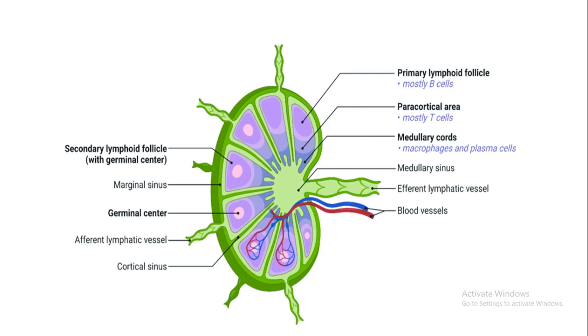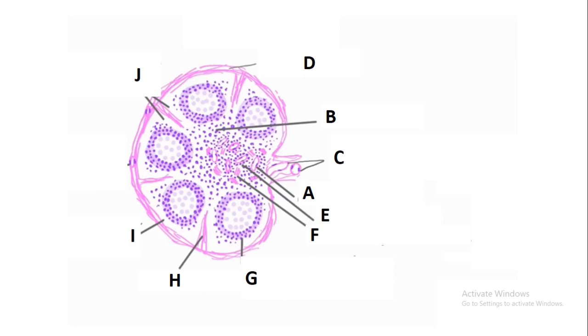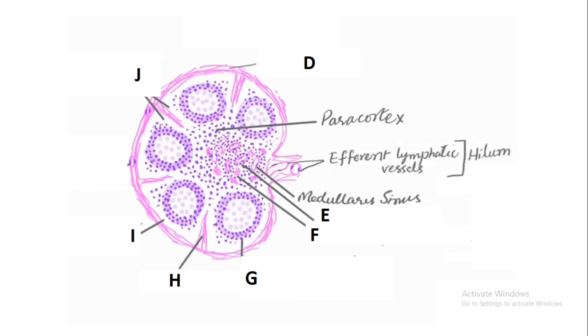Please make sure you are able to label this diagram and subscribe to our YouTube channel. Let's quickly look at the last diagram, which is a drawing — make sure you are able to draw this. When asked to draw the lymph node, I would advise you to draw this diagram. A is the medullary sinus and B is the paracortex.